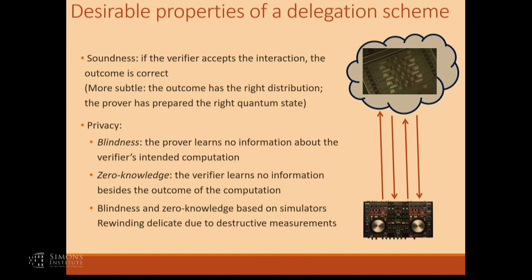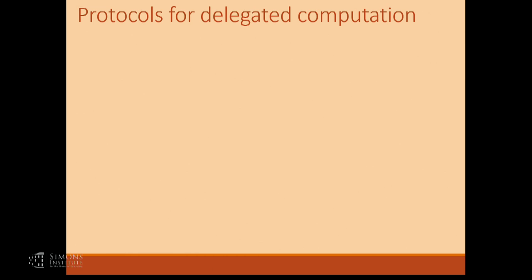That's particularly tricky in the case where the device is quantum, because we cannot rewind these quantum devices in general — especially when the interaction is classical, since the device performs measurements to determine the outcomes sent back to the verifier, and these measurements are non-reversible. We will have developed a whole set of techniques to deal with this difficulty of making rewinding arguments go through in the quantum case.